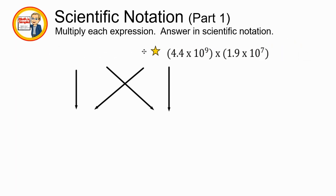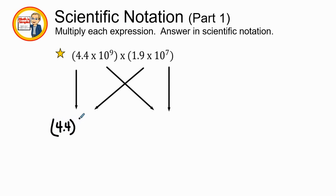Our next problem, we have 4.4 times 10 to the 9th times 1.9 times 10 to the 7th power. Now 4.4 times 1.9 times 10 to the 9th power. Now 4.4 times 1.9 gives us 8.36 times 10 to the 9th power. 9 plus 7 using the product rule, 9 plus 7 is 16, 10 to the 16th power.